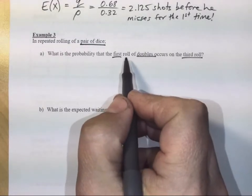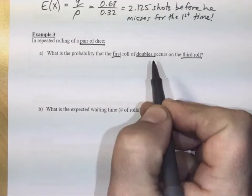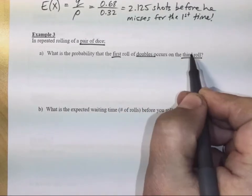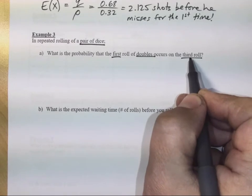Well that means that on the first roll we couldn't have got doubles, on the second roll we couldn't have got doubles. We only got doubles on the third roll, so we are waiting for doubles to happen.